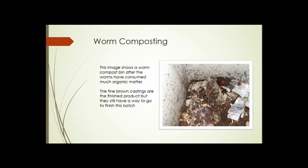Here we see another shot of the worm compost bin, and here you can see at this point there's a lot more worm castings and less bedding. Some new bedding has been added, and notice that it's just moist, not wet. The fine ground castings are the finished product, but that batch still has a ways to go. So that's an alternative method of doing composting, in addition to the more traditional methods. And that is the end of this unit.